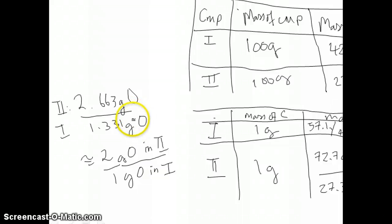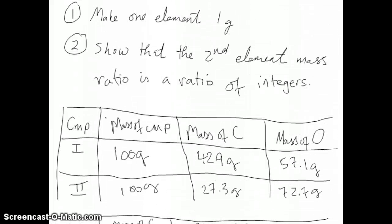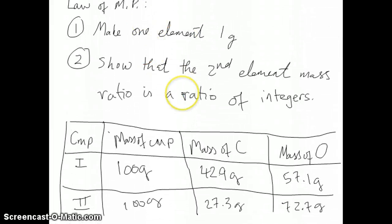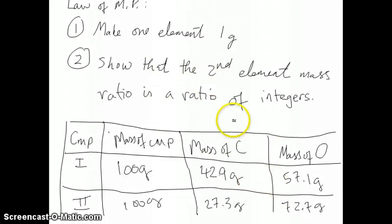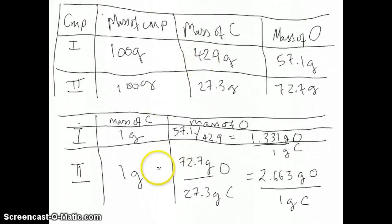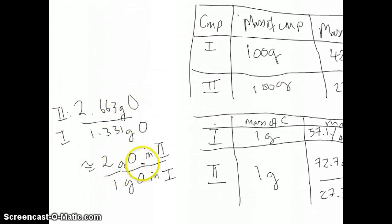So we've shown that this data supports the law of multiple proportions. We did that in two steps: first, make one of the elements 1 gram; second, show that the ratio of the second element expressed per 1 gram of the first is a ratio of integers. Now I want you to do the same thing again, but instead of making carbon 1 gram, express it per gram of oxygen. See if you get the same type of integer ratio for carbon in compound 2 versus compound 1.